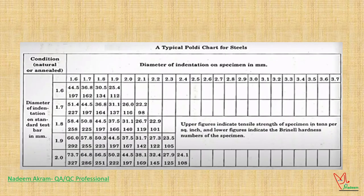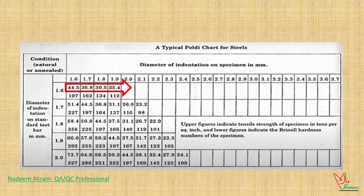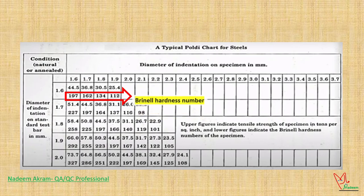A typical Poldi chart for steel is shown, in which upper figures indicate tensile strength of specimen, and lower figures indicate Brinell hardness number of specimen. For instance...